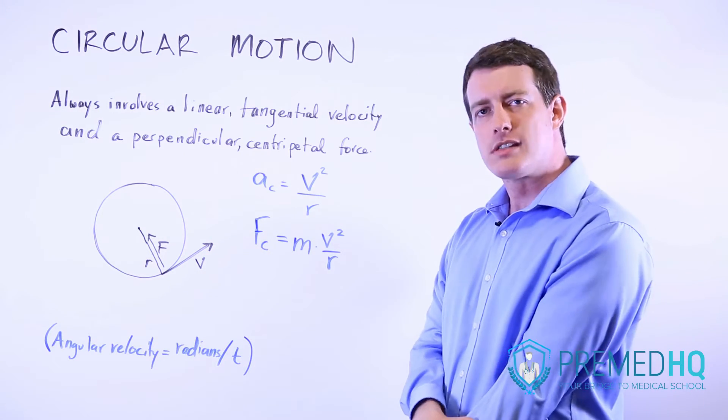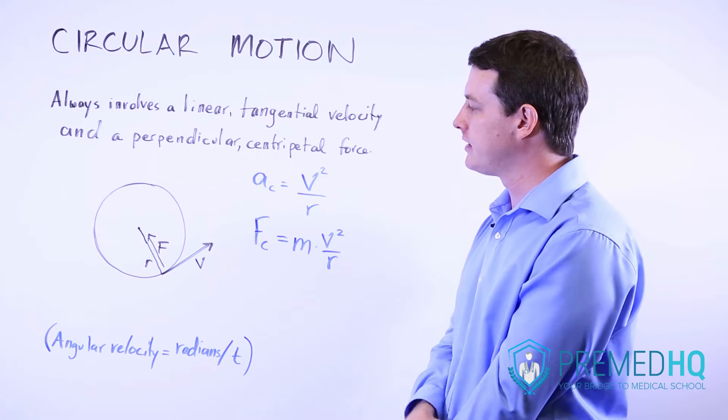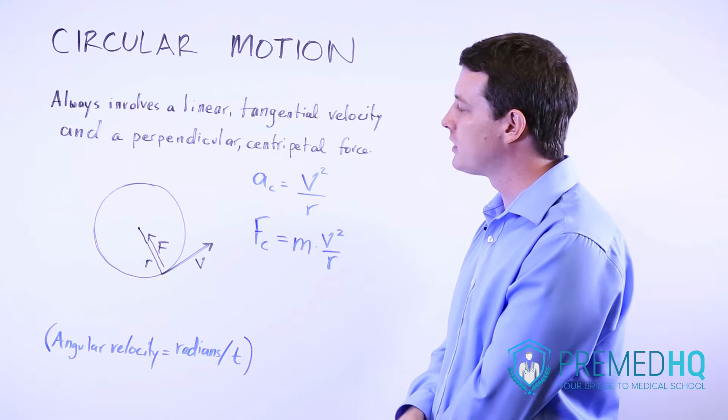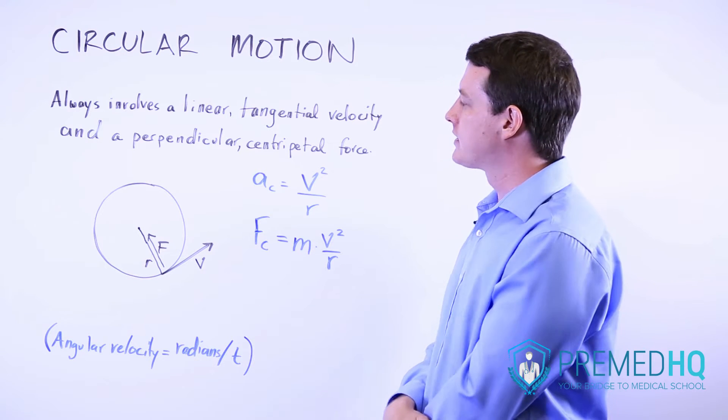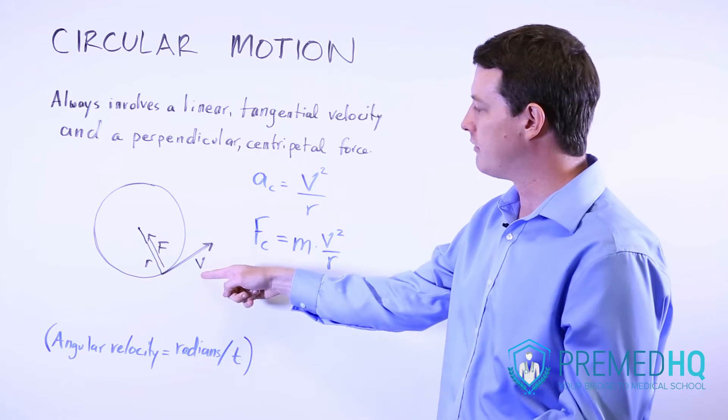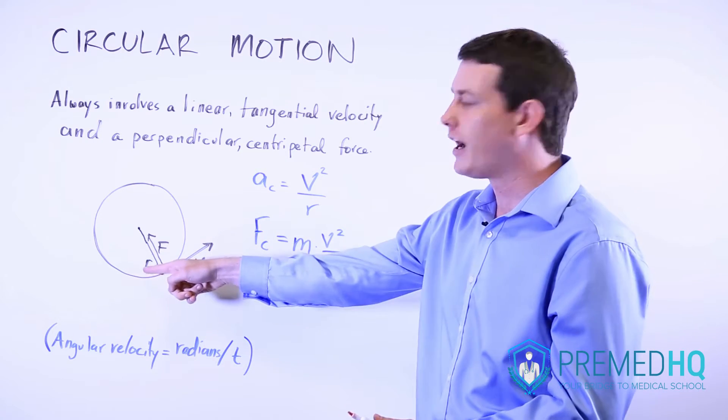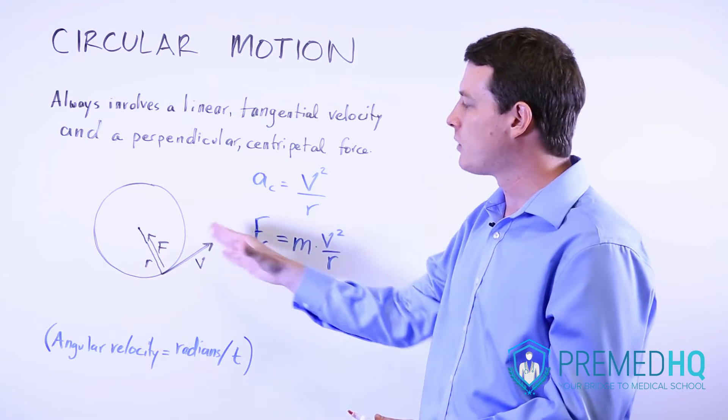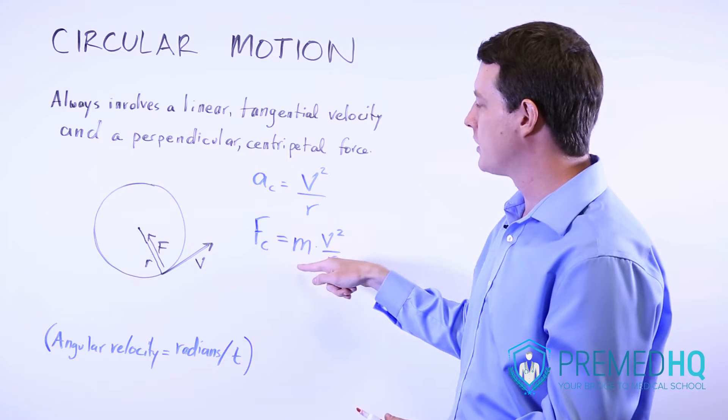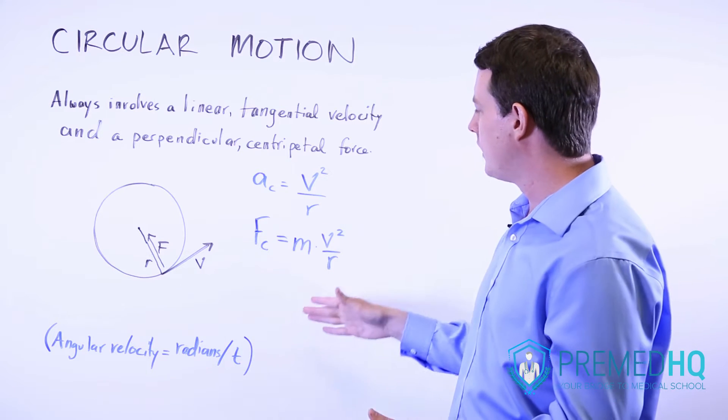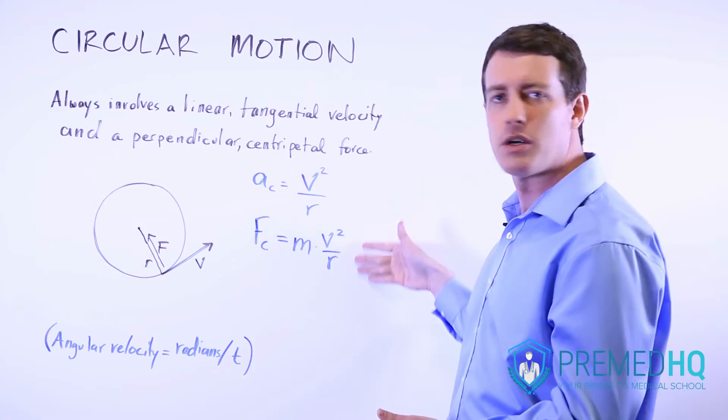There are a few formulas you should know when taking on these problems on the MCAT. The first is that centripetal acceleration is equal to the velocity squared divided by the radius. The other is that centripetal force is equal to the mass of the object times the centripetal acceleration.